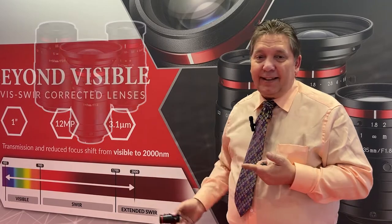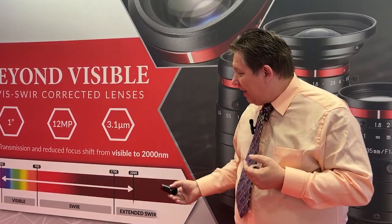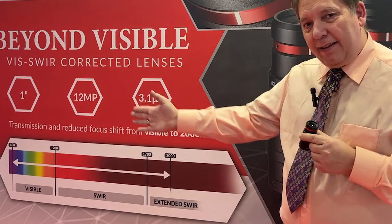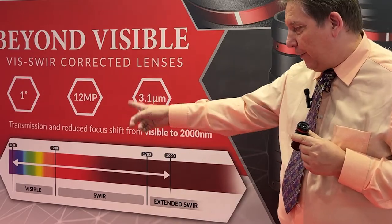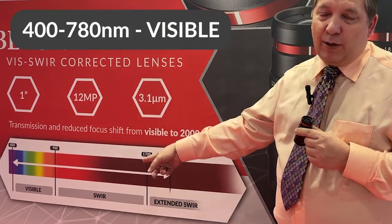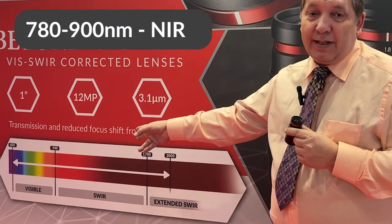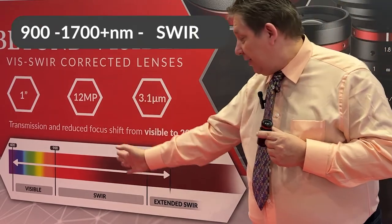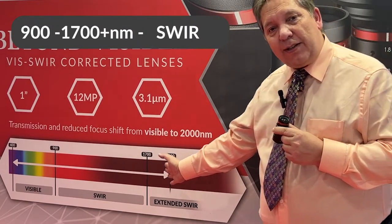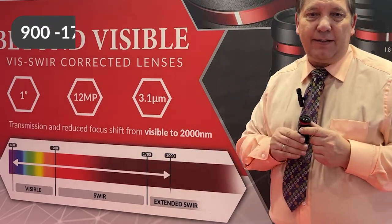It's indicated here on this wall with a little drawing and some examples. This is the lens. You can see the wavelength scale starting from 400 to 780, which is visible; from 780 to 900, which is NIR; and from 900 to 1700 or more than 2000 nanometers. This is called the SWIR area — short wave infrared.